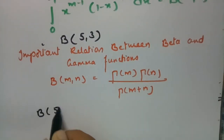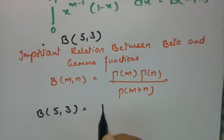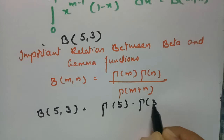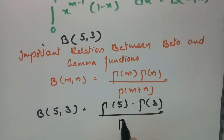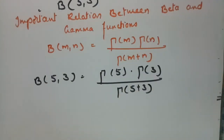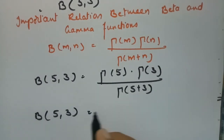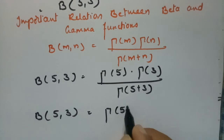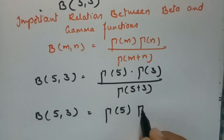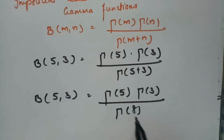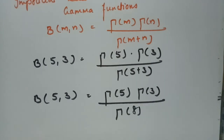Applying this formula, beta of 5 comma 3 is equal to gamma(5) into gamma(3) divided by gamma(5 plus 3), which is gamma(5) into gamma(3) by gamma(8). And we also have the formula that gamma(n) is nothing but (n minus 1) factorial.